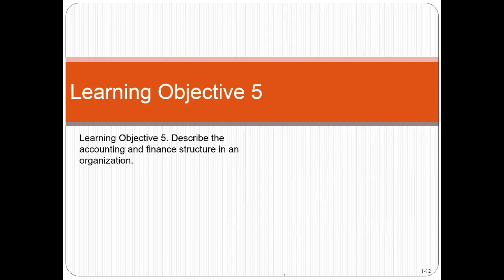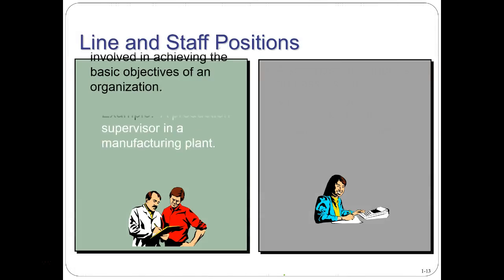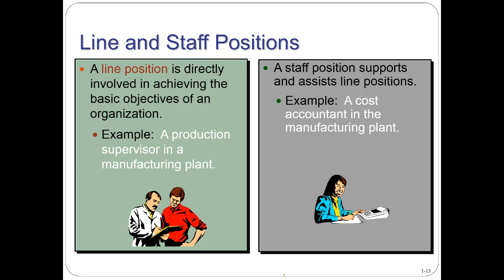Learning objective five: describe the accounting and financial structure in an organization. We have both line and staff positions. A line position is directly involved in achieving the basic objectives of an organization — for example, a production supervisor in a manufacturing plant who is directly involved in producing the manufactured product. A staff position supports and assists line positions — for example, a cost accountant in a manufacturing plant. The cost accountant is not directly involved in manufacturing but supports the plant by crunching the numbers, seeing where improvements can be made, and informing decision making.